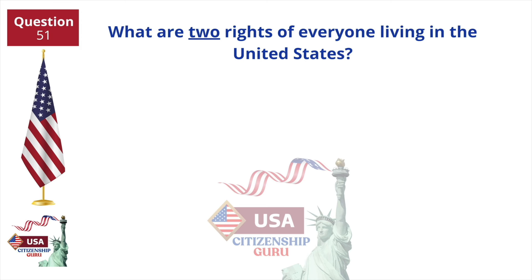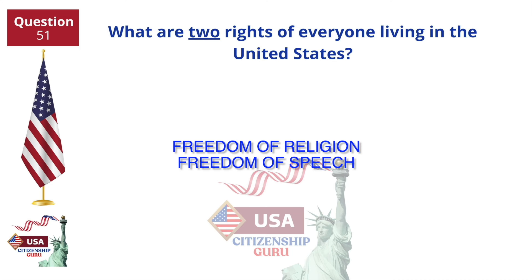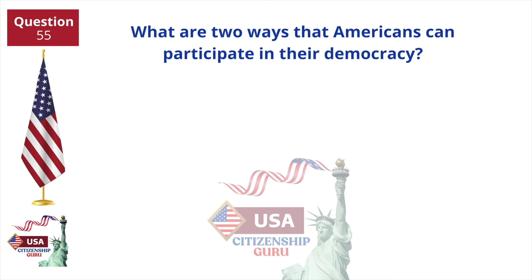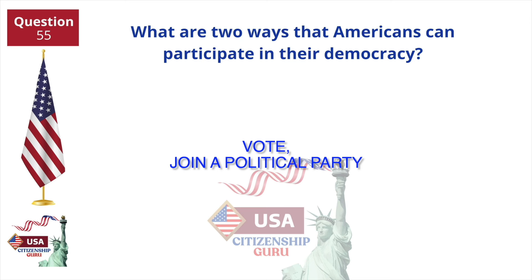What are the two rights of everyone living in the United States? Freedom of religion and freedom of speech. What are two ways that Americans can participate in their democracy? Vote and join a political party.